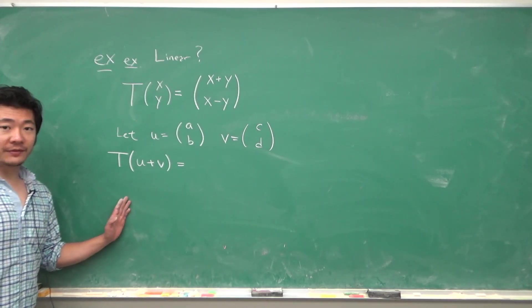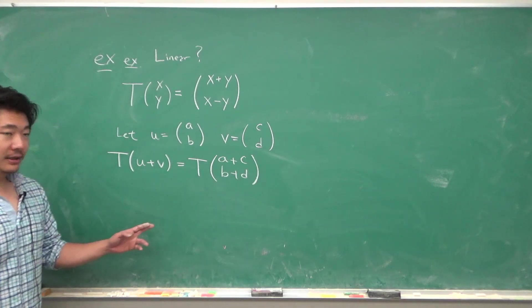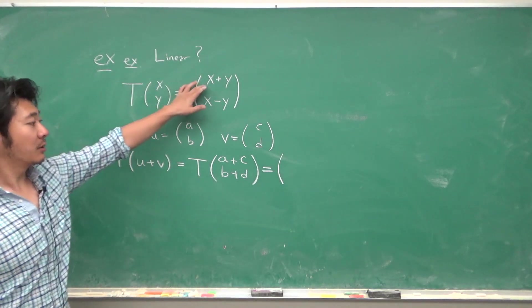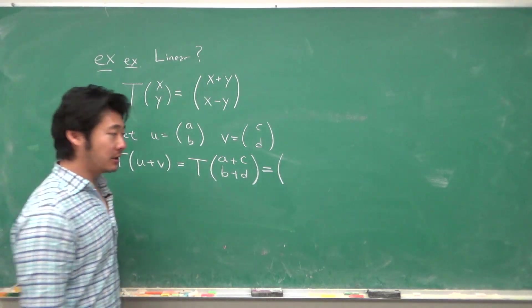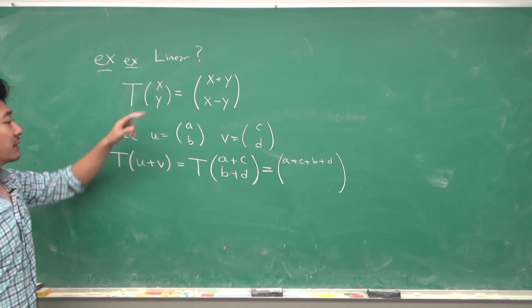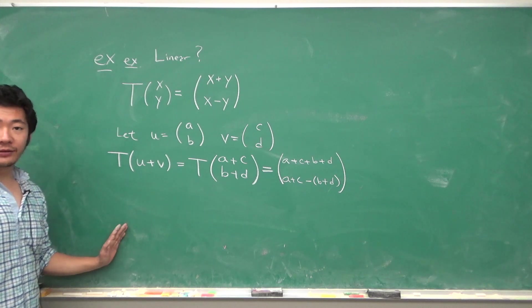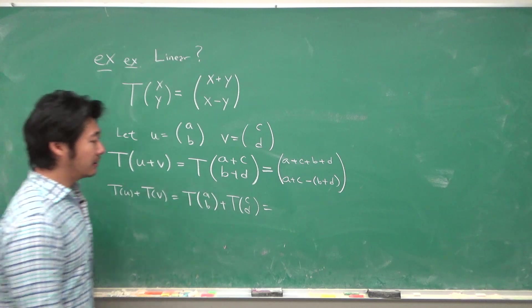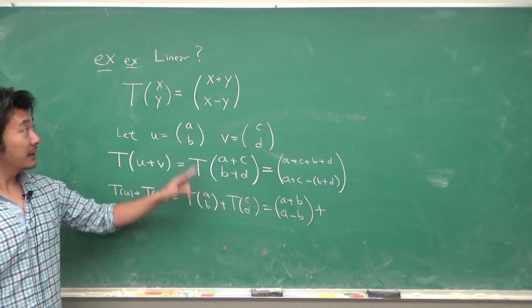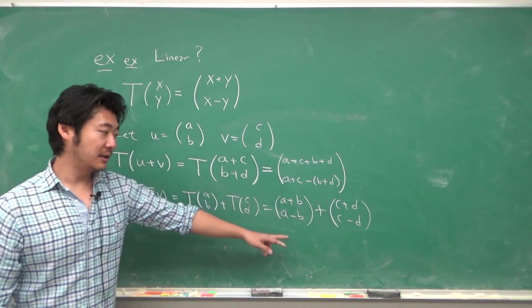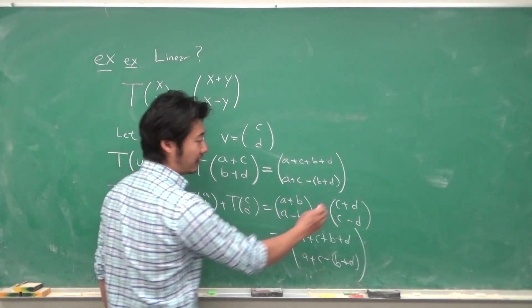T of u plus v is equal to T of (a+c, b+d). According to our assignment, the first component is the sum of these two and the second component is given by their difference. Now let's check what T(u) plus T(v) is equal to. So we have T(a,b) will be (a+b, a-b) and T(c,d) is (c+d, c-d). And so in fact, they are equal.